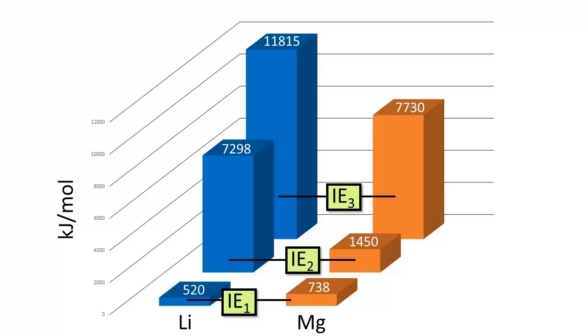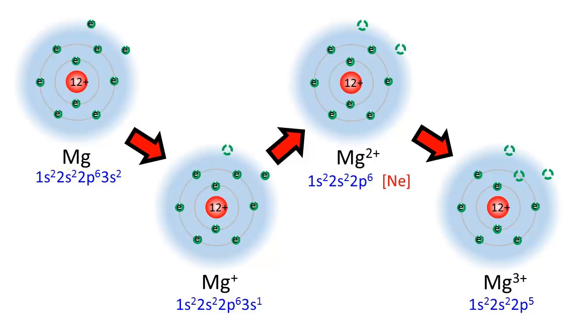Let's compare this to magnesium. The gap between magnesium's first and second ionization energies is fairly small, but the gap between its second and third ionization energies is off the charts. There's a large gap between the second and third ionization energies of magnesium for the same reason — magnesium achieves a noble gas electron configuration after two electrons have been removed. So removing the third one is the particularly difficult step that requires a lot of energy.